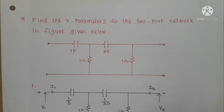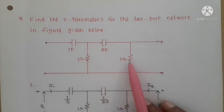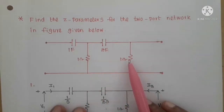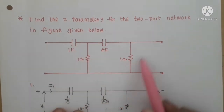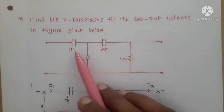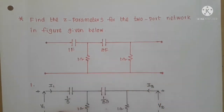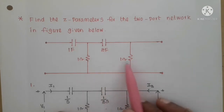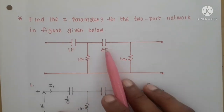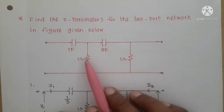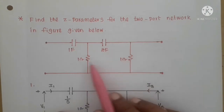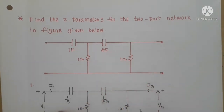Find the Z parameters for the two-port network in the given figure. Here it is a two-port network where the elements are capacitors and resistors — a one farad capacitor and two farad capacitor are the series elements, and the shunt elements are one ohm and one ohm.